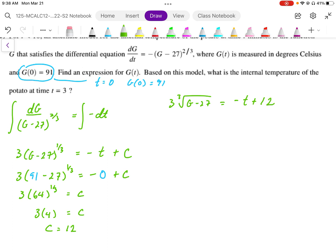Then solving for our G value, we're going to end up with (G minus 27) equals (negative t plus 12) over 3. So our final equation, our G(t), is going to equal, I'm going to rewrite this as (12 minus t over 3) cubed plus 27.